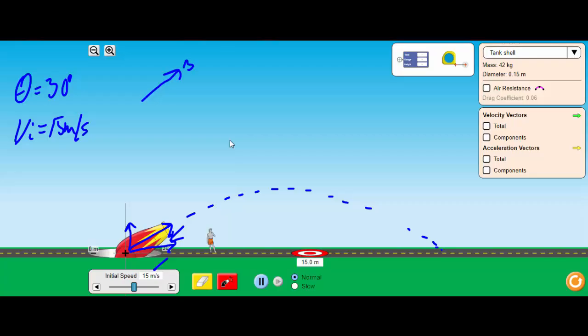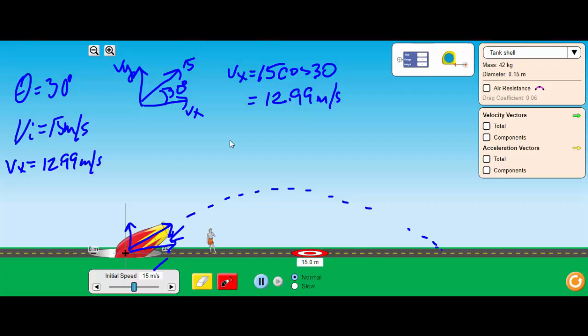My angle is 30, so I need my X velocity and I need my Y velocity. So my X velocity, to find the X velocity, that is the resultant which is 15 times the cosine of my angle which is 30, and that equals 12.99 meters per second. So my X velocity is 12.99.